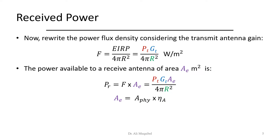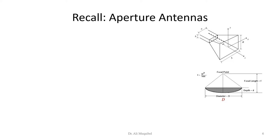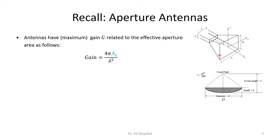Now we will see some examples. As we develop our link budget analysis we would like to go from the transmitter to the receiver. Since we mentioned antenna size and dimension, I'd like to recall that there are different antenna dimensions. For example, there are horn antennas — they have a certain aperture, which is the opening of the antenna. Antennas have maximum gain G related to the effective aperture, which is the area A sub a.